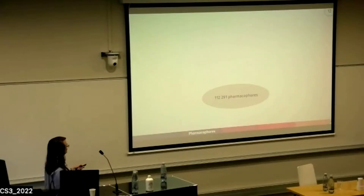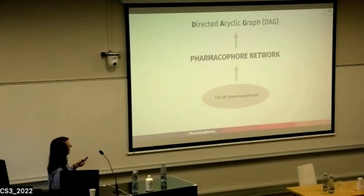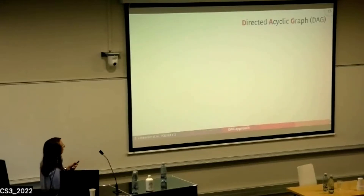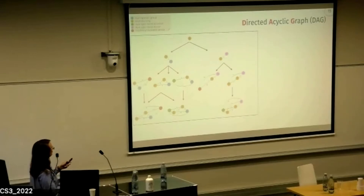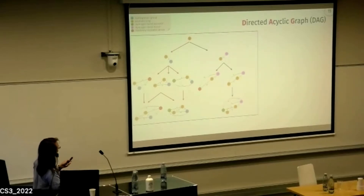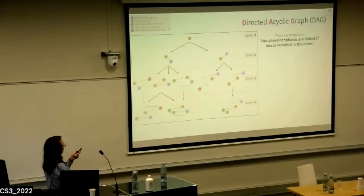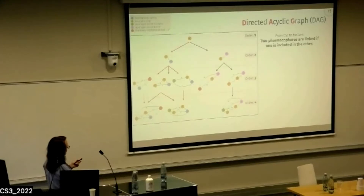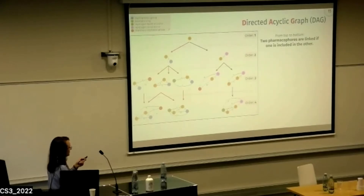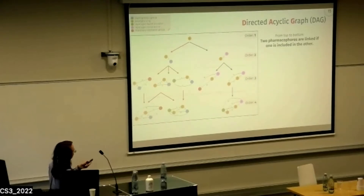We decided to build a pharmacophore network through what we call a directed acyclic graph (DAG). Here is an example: each circle is a pharmacophore motif, and the distances represent the topological distance between two motifs. Reading the graph from top to bottom, at each level we add one pharmacophoric feature. Two pharmacophores are linked if one is included within the other — for example, this red one is included in this one — forming a parent-child family relationship.